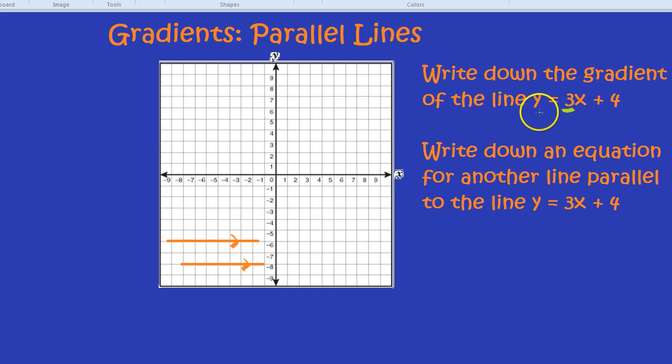So we can see that this line, y equals 3x plus 4, would start off here at plus 4 because of the y-intercept of 4. Now, the gradient of 3 means for every 1 you go right, it goes up by 3 because it's plus 3. So 1, 2, 3. For every 1 you go right, you go up by 3. 1, 2, 3. So there's our line.